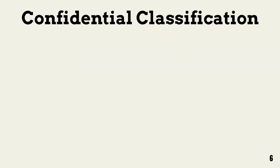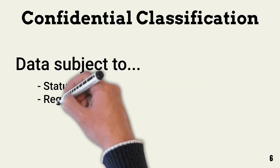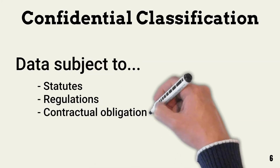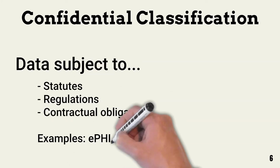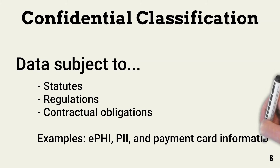In this classification scheme, confidential is the most sensitive classification. Data classified at this level are usually subject to statutes, regulation, or contractual obligations. A breach of this data may result in high business impact. EPHI, PII, and payment card data fall under this classification.